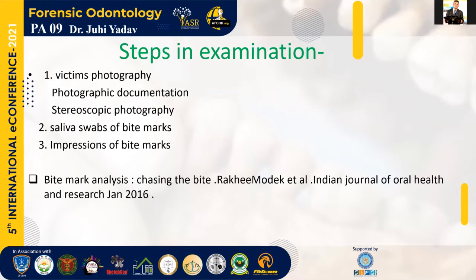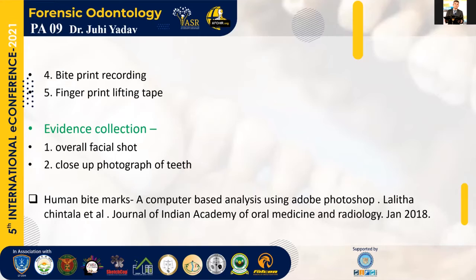We have to take impressions of bite marks. Initially alginate was used, but it is not very good. We should be going for addition silicone impression materials, which give very good impressions of the bite marks. We should also do bite recording, because the anatomic location can be properly recorded on videotape. We can also use fingerprint lifting tape to record the bite marks properly.